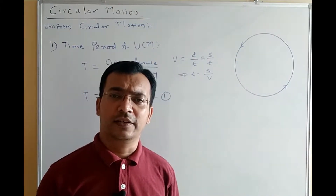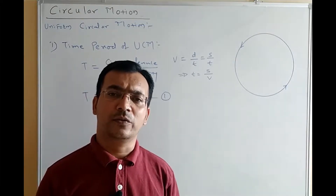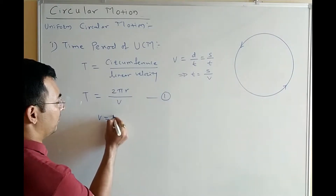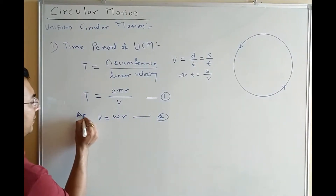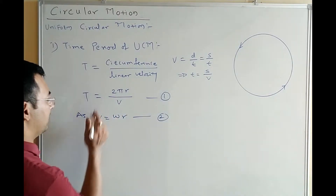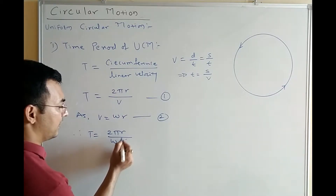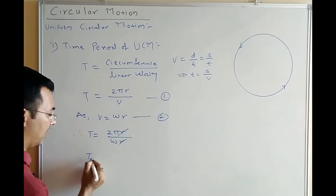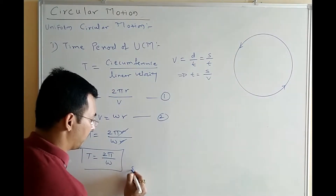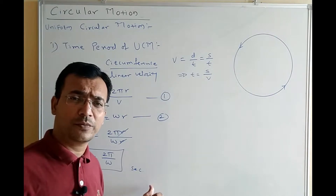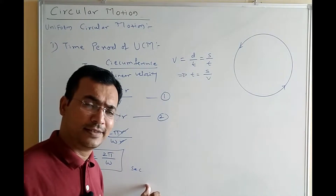In the previous lecture, we have seen the relation between v and omega: v = ωr. Substituting v = ωr into the formula T = 2πr/v, we get T = 2πr divided by ωr. The r cancels, so T = 2π/ω. The unit of time period is seconds.